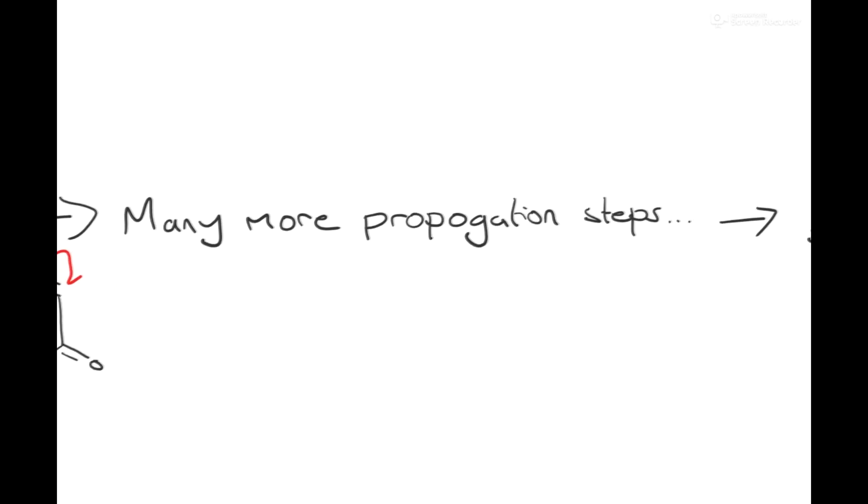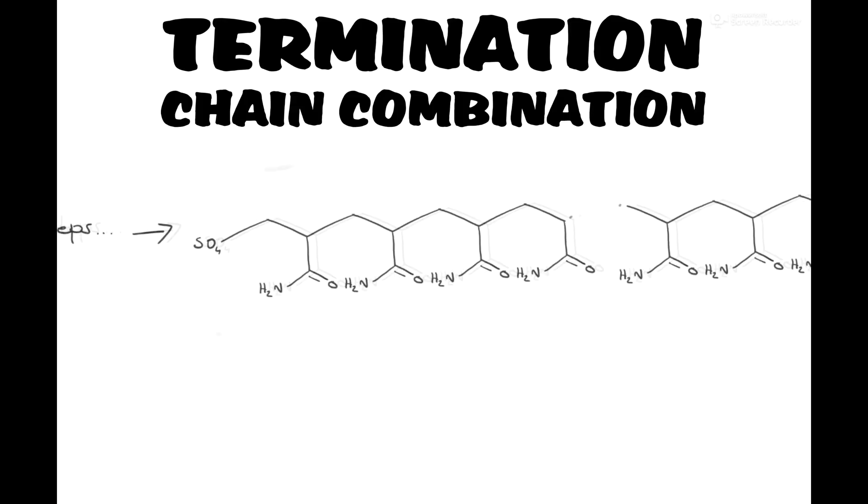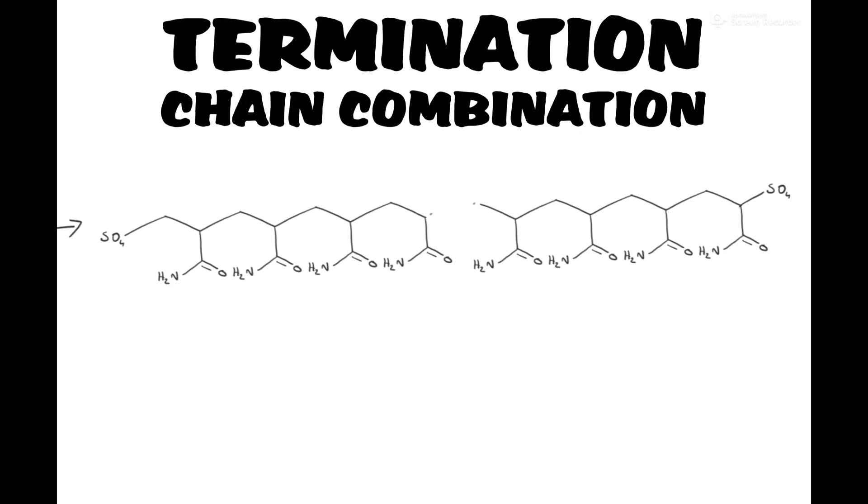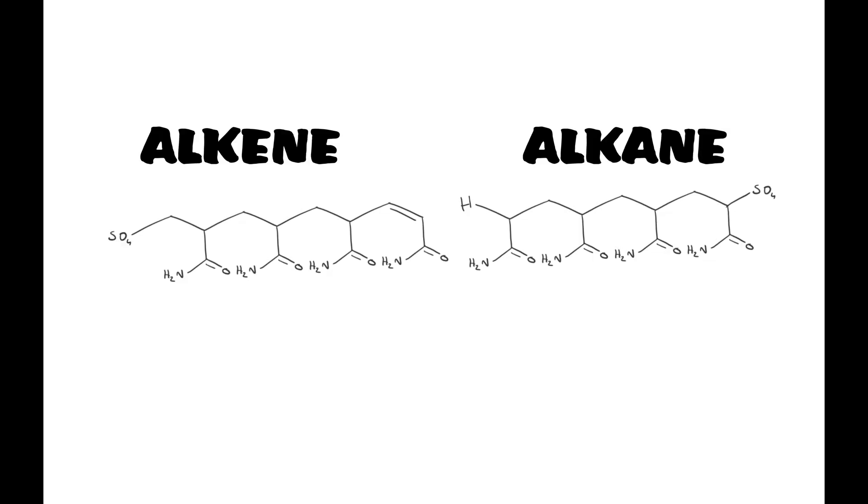The reaction terminates when the end group is deactivated. This usually occurs through chain combination, where two reactive radicals on different polymer chains react with one another to form a bond, or less commonly, the reactive radical can abstract a hydrogen from another chain, forming an alkene and an alkane in a disproportionation reaction.